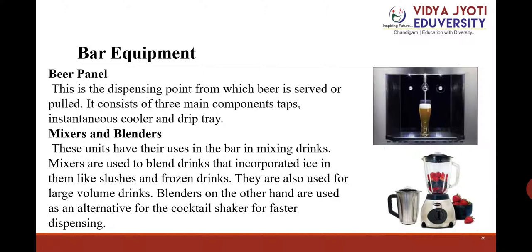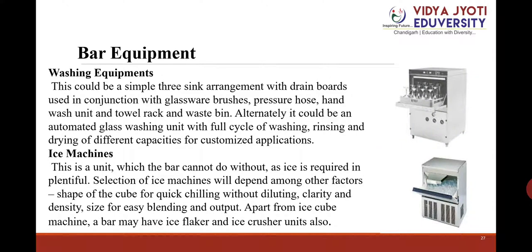Mixers and blenders: These units are used in the bar for mixing drinks. Mixers are used to blend drinks that incorporate ice, like slushes and frozen drinks, and also for large volume drinks. Blenders are used as an alternative to a cocktail shaker for faster dispensing. Washing equipment: This could be a simple three-sink arrangement with rainbows used with glassware brushes, pressure hose, hand wash unit, and towel rack and waste bin, or an automated glass washing unit with a full cycle of washing, rinsing, and drying of different capacities.